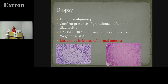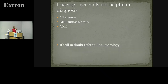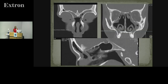It is important to exclude malignancy. Imaging is not helpful in the diagnosis but is often involved in the workup. The most important thing is working closely with your rheumatological colleagues — they are very good at finding other signs and symptoms that either support or refute the diagnosis, even in ANCA-negative patients where you have a high clinical index of suspicion.